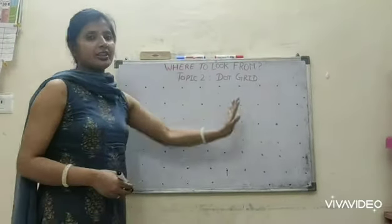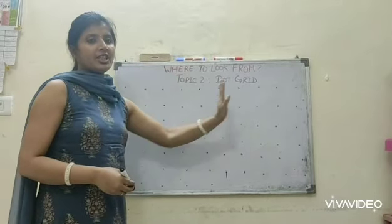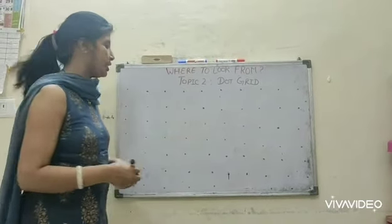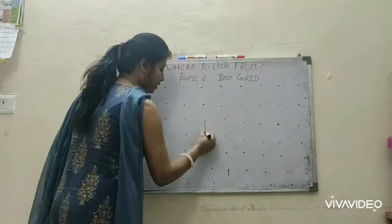As you see here, this is a dot grid and in dot grid the dots are equidistant from each other. Let us make a design with the help of this dot grid.